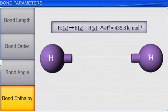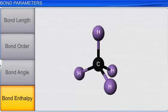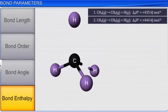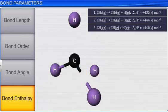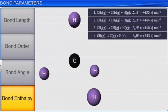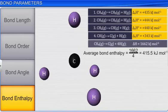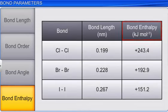When a molecule is made of more than two atoms, it consists of more than one bond. In such cases, the bond enthalpy for each bond may be different. Hence, the average of all the bond enthalpies is taken as the bond enthalpy of that molecule. Bond enthalpy is inversely proportional to bond length. This means the shorter a bond between two atoms, the more energy it takes to break it.